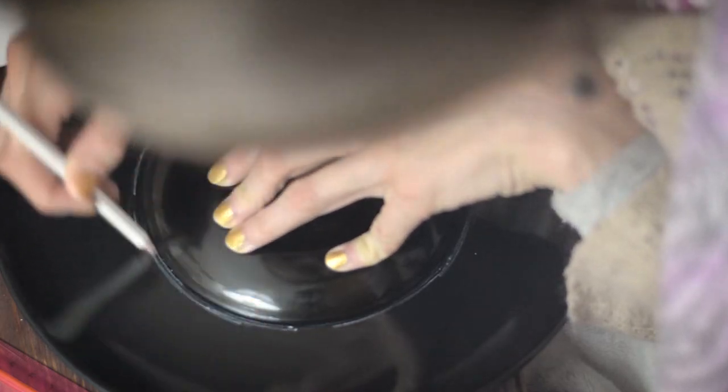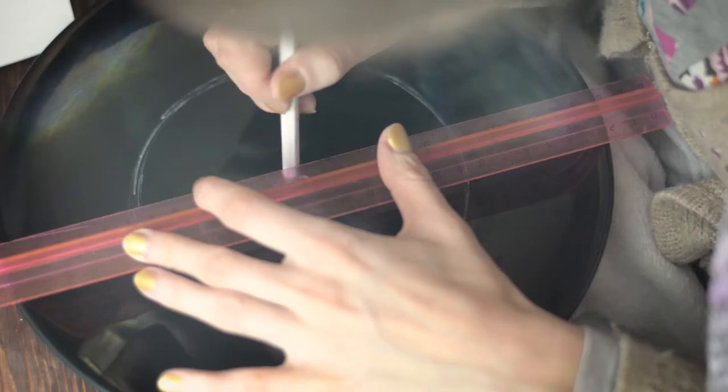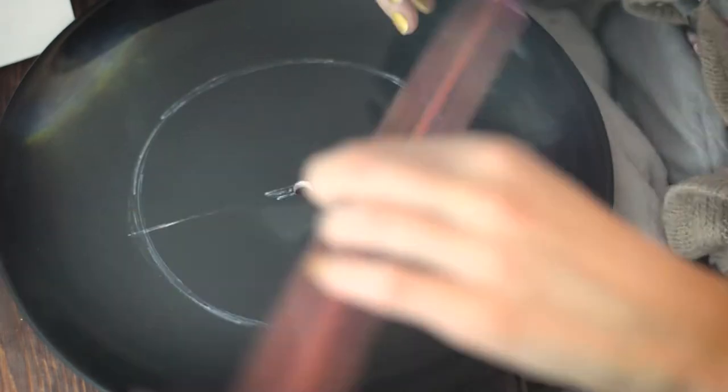Before we start drawing, we need to make sure that the clock shows the exact time. To do this, I just draw a line through the center and at the same distance place markings.